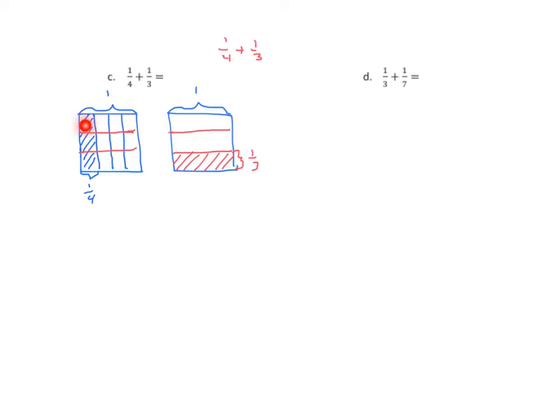Counting the parts, we have twelve total. So my denominator for my new fraction here is twelfths. How many of the twelve are shaded? That would be three. So one-fourth becomes three-twelfths.